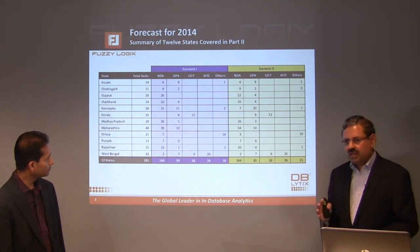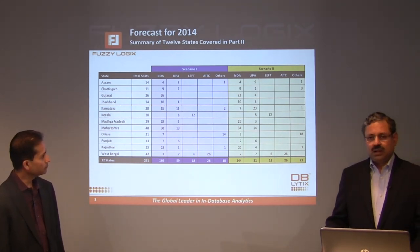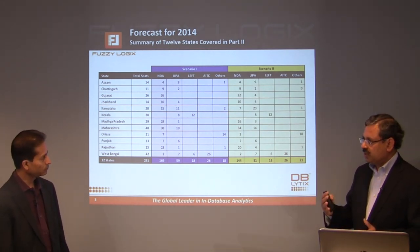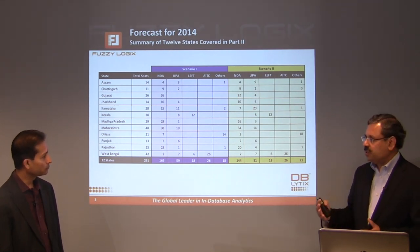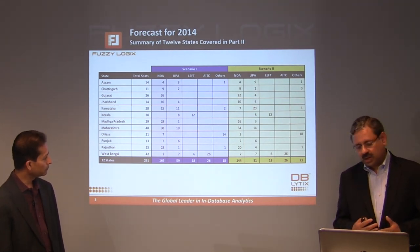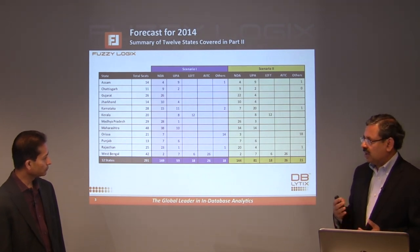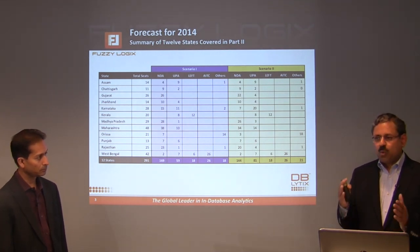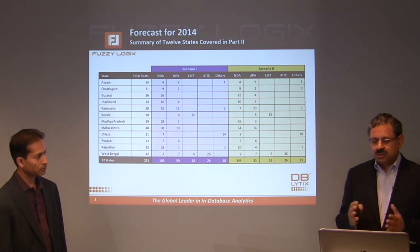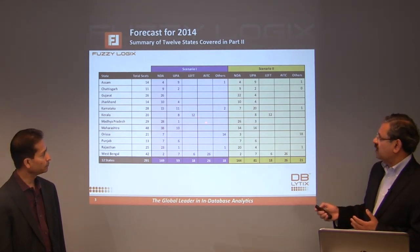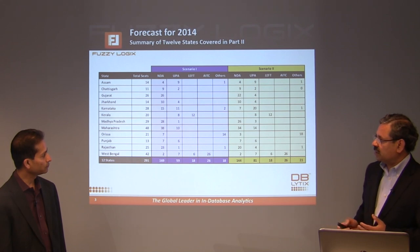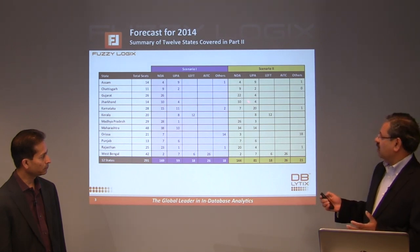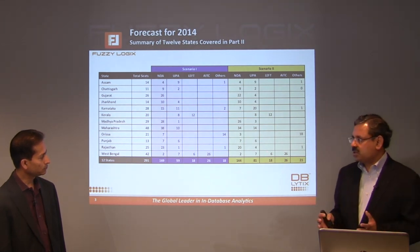We summarized projected wins for both the BJP-led NDA and the Congress-led UPA. We performed sensitivity analysis, giving two scenarios rather than one number. Scenario one, on the left side of the screen, is more optimistic towards the BJP. Scenario two is less optimistic towards the BJP.